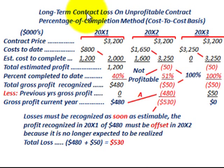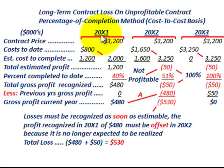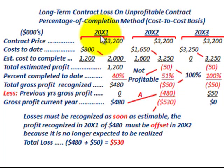We're going to be going over a long-term contract where we have a loss that makes this contract unprofitable. We'll start out looking at the percentage of completion method for recording this contract, and we'll also touch on the completed contract method. We have a three-year contract from 20x1 through 20x3, and we're going to have a loss on this contract in 20x2.